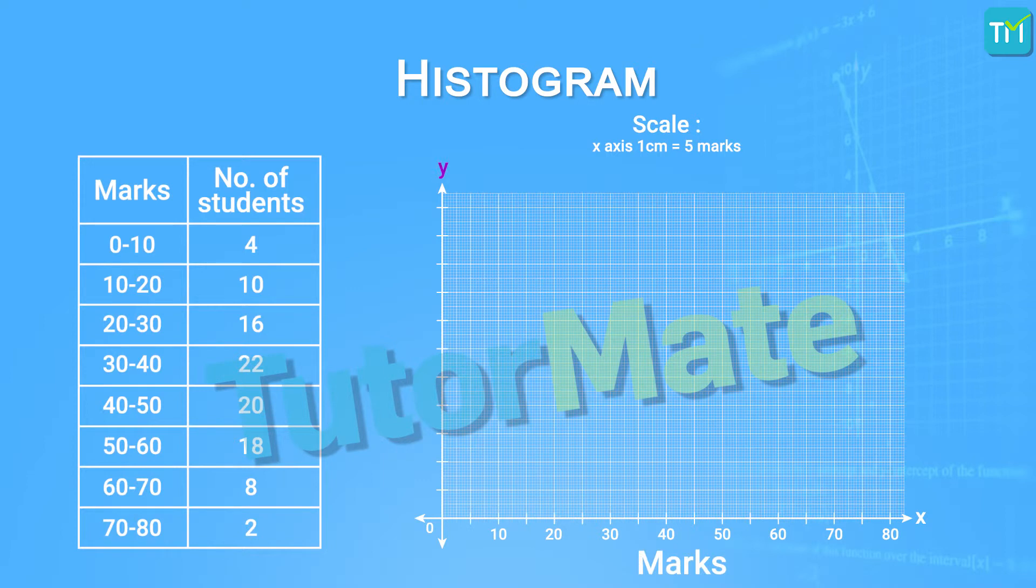And next on the y-axis, we will represent the frequencies. Here we can see that the maximum frequency is 22, and this means that the highest value that we need on the y-axis is 22. So let's take the scale on the y-axis as 1 centimeter equals 2 students. On the y-axis we will start from the origin and mark 2, 4, 6, and so on at intervals of 1 centimeter each till we reach 22.